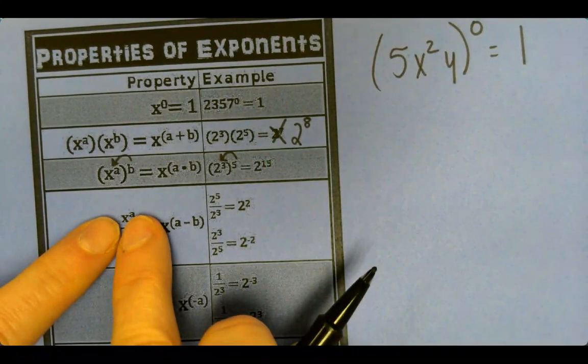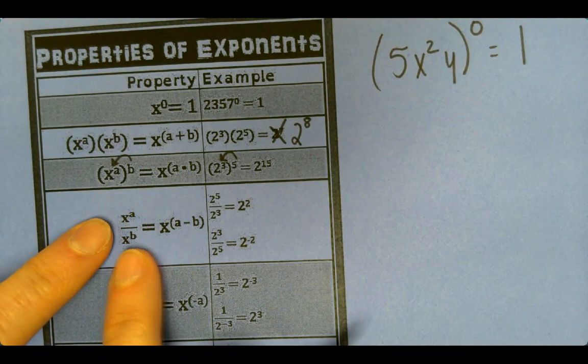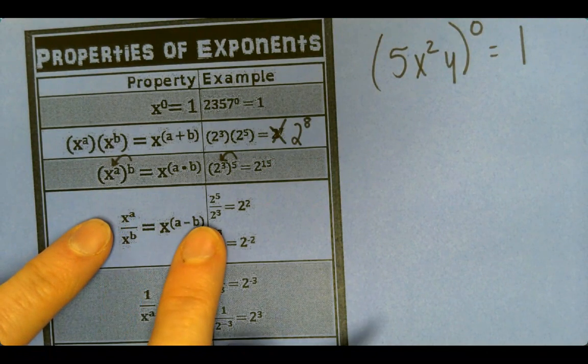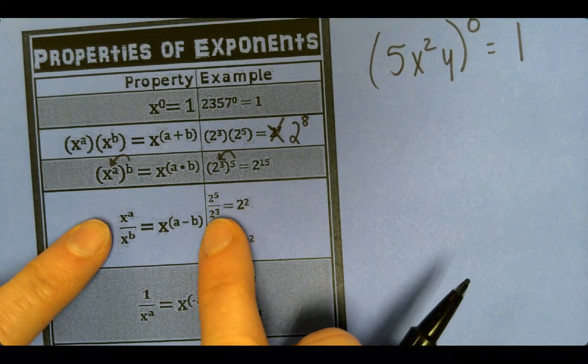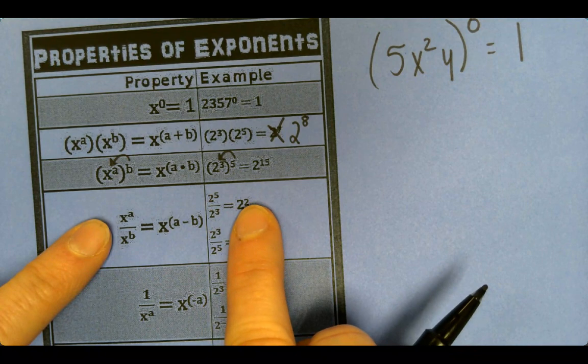If we have division, we're going to subtract our exponents. So a minus b. As long as they are like bases. So it's 2 to the 5th over 2 to the 3rd. We're going to subtract 5 and 3 to get 2 to the 2nd power.